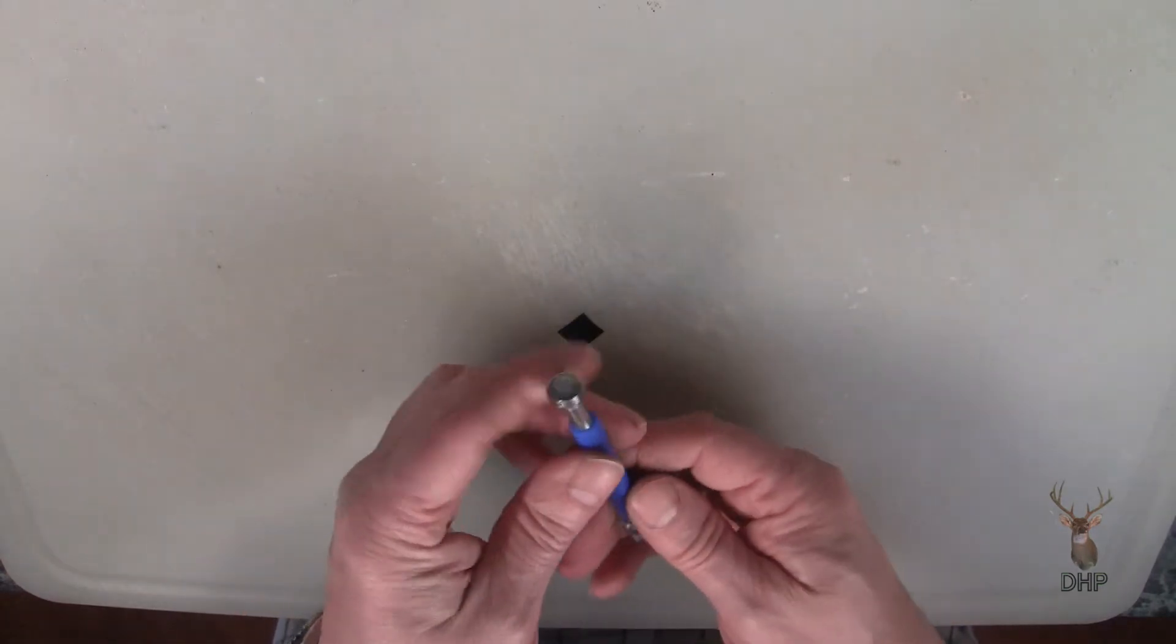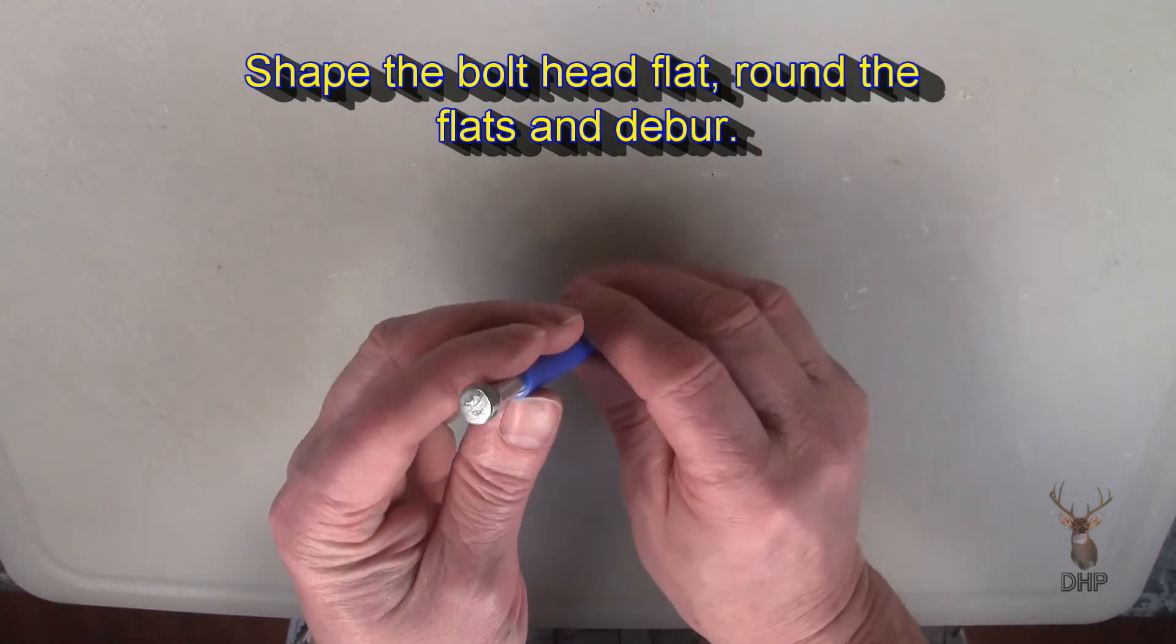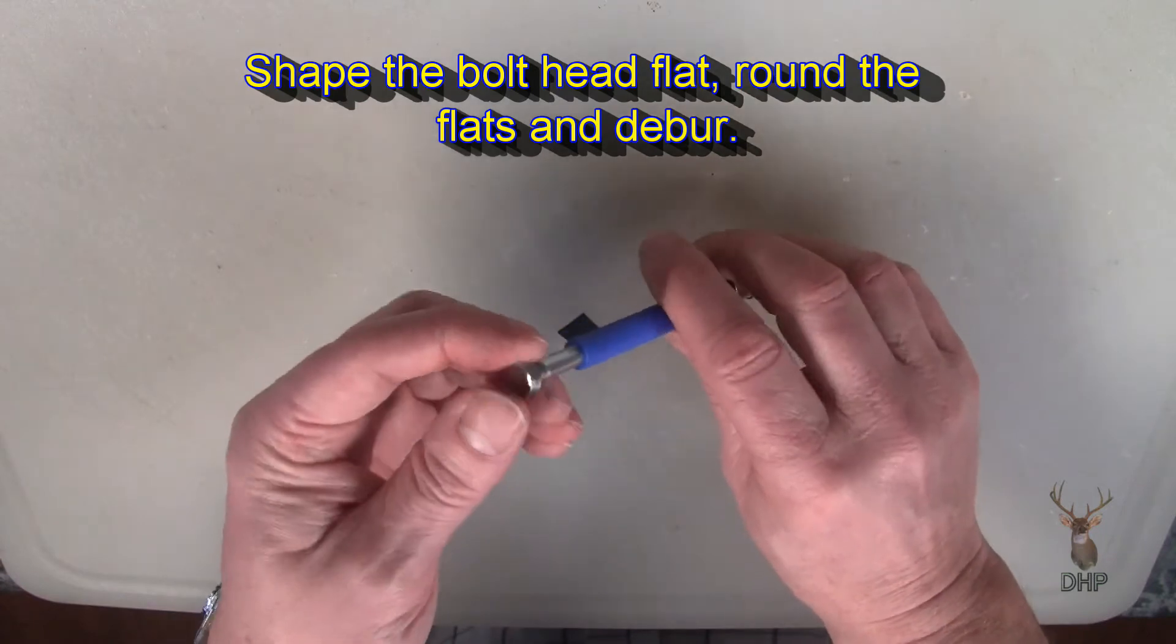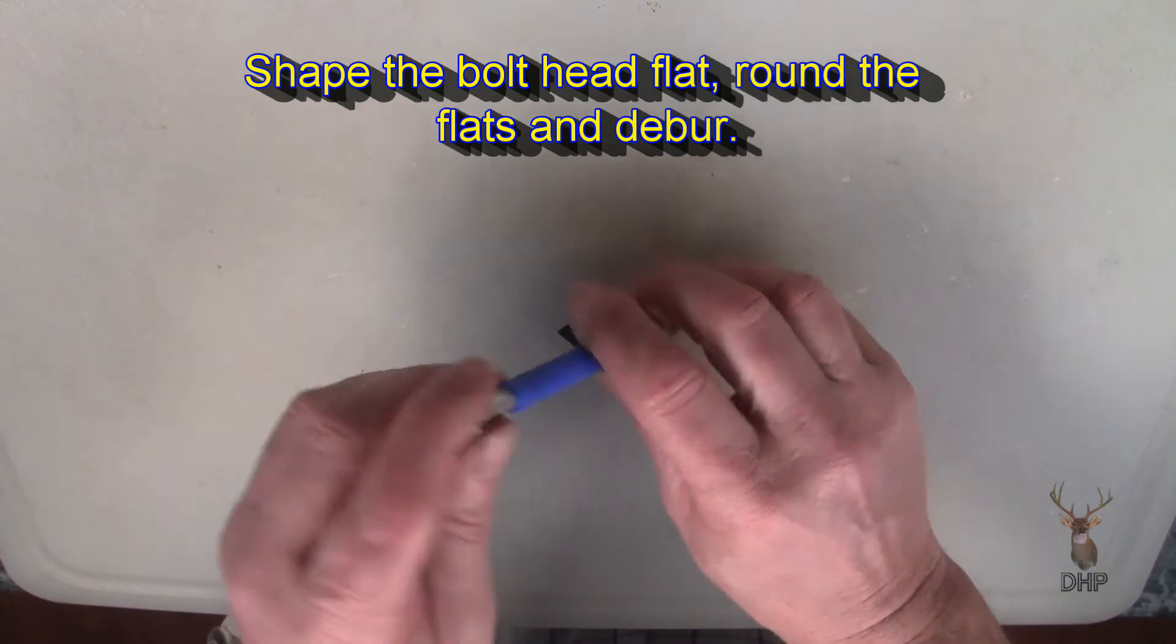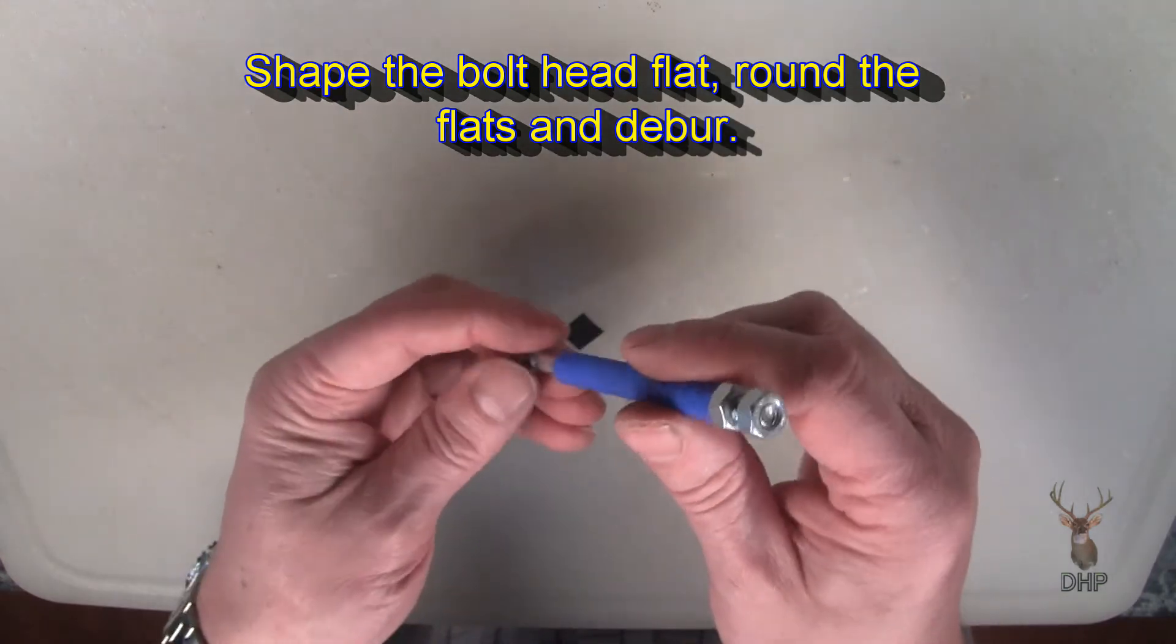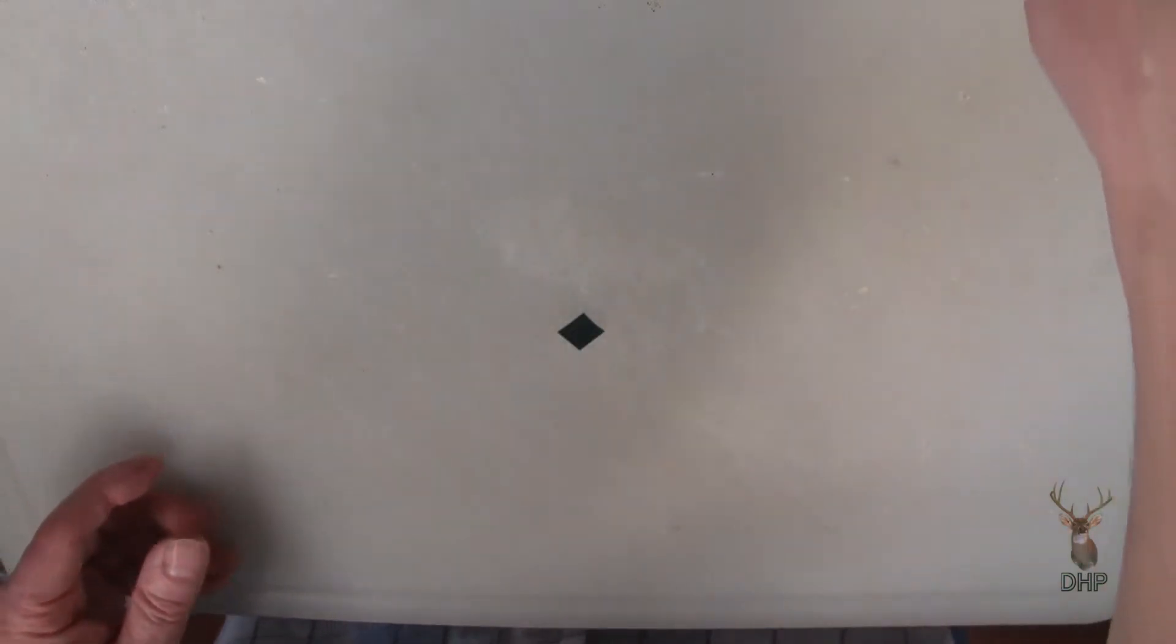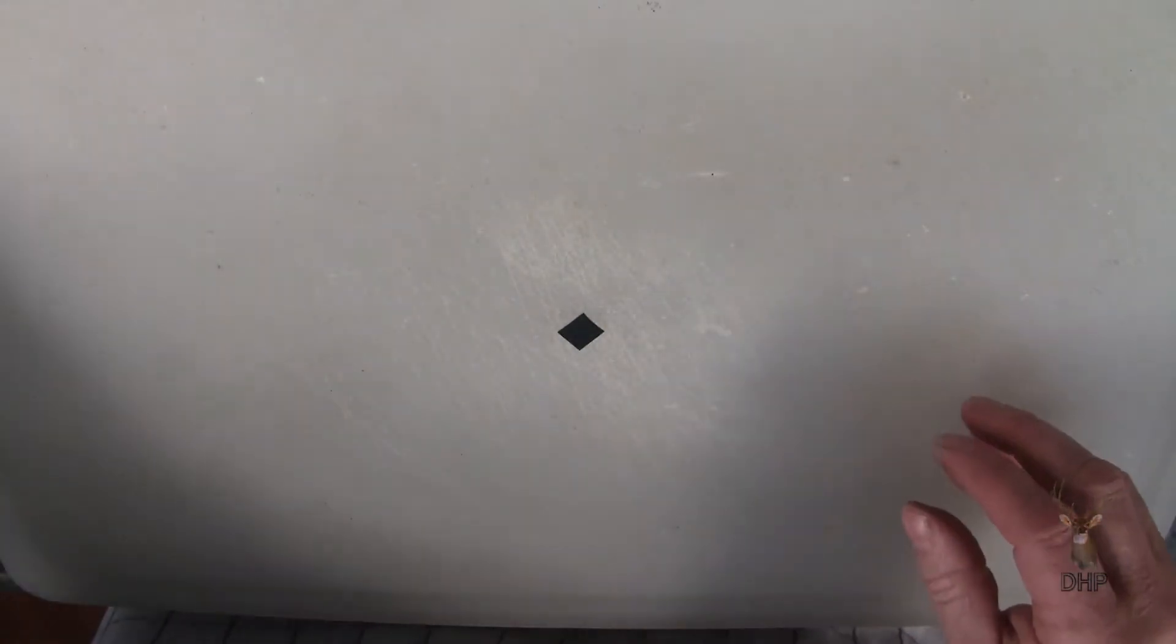Something else I do is I take and sand off the edges, the bumpy edges, the six corners. Round it off, flatten it off, take the grade of the bolt off so it's a perfectly flat, smooth surface, deburred on that side. Now I have something that looks like this. I'm actually making that for a friend of mine who's cutting me some stencils.